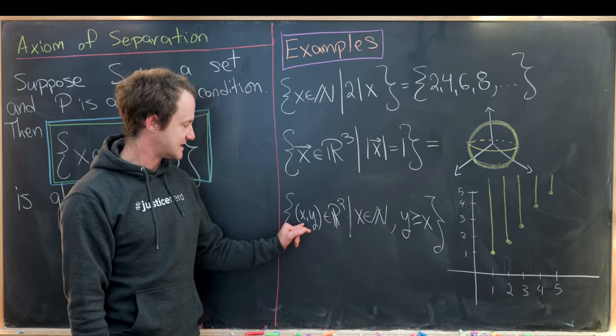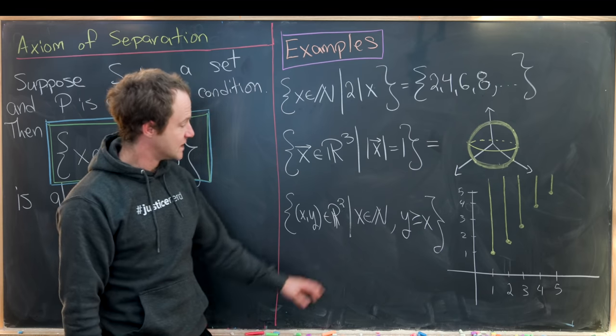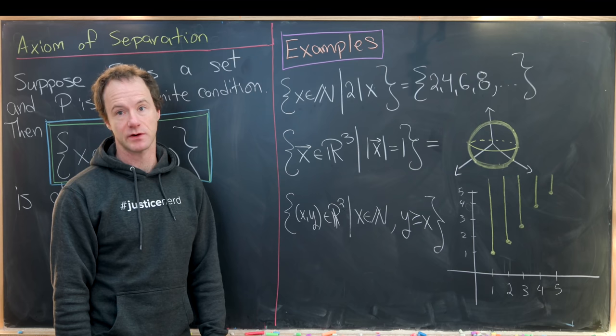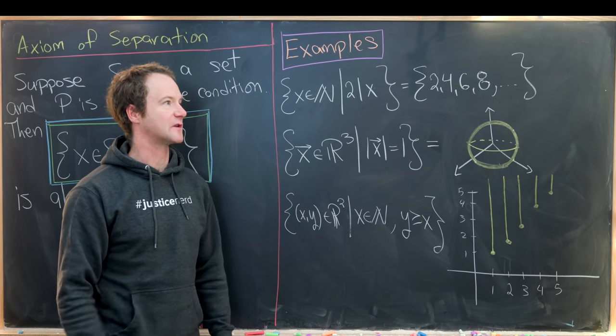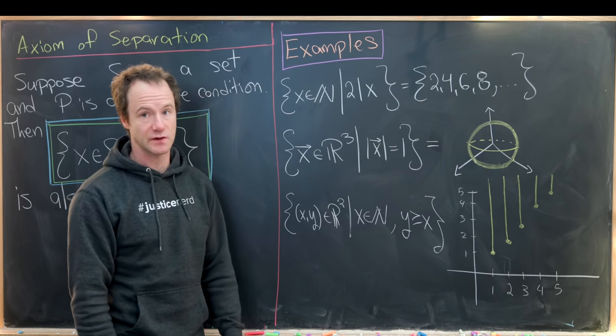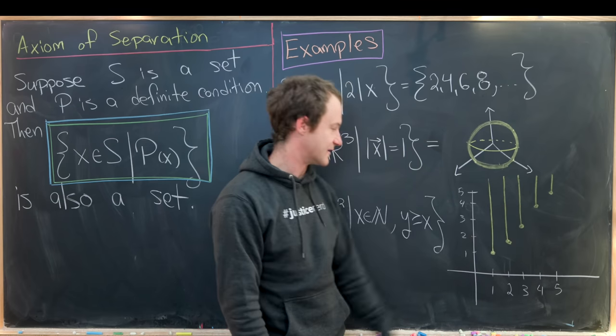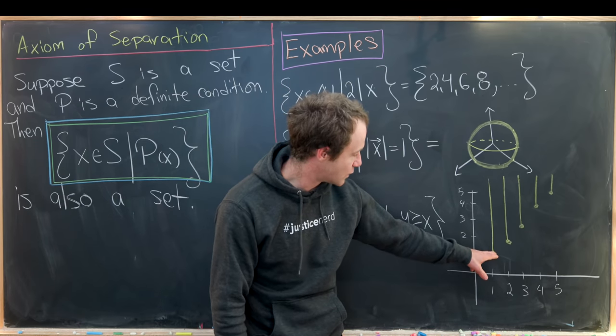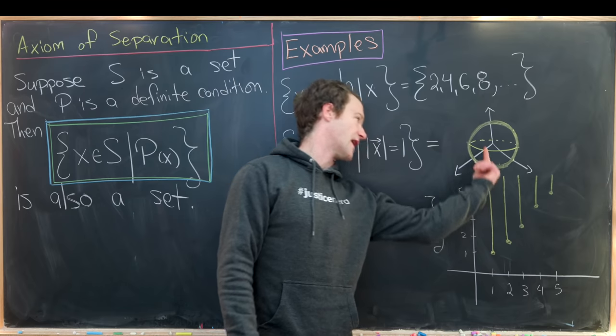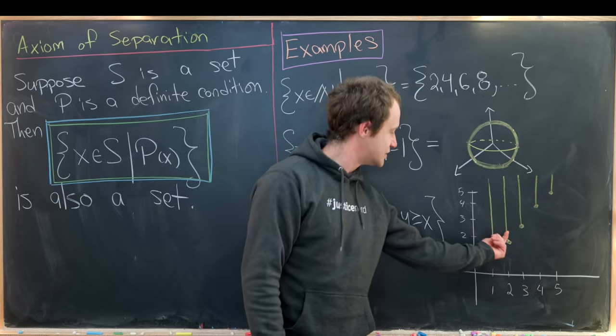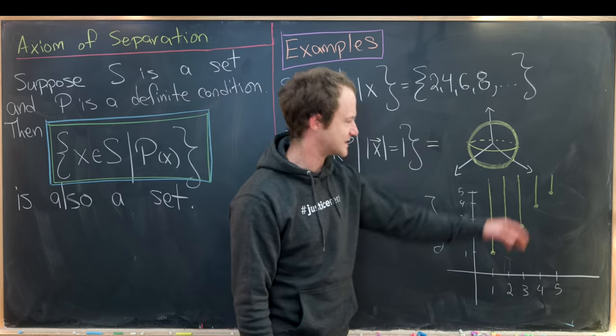Then for my next example, let's take all points XY in R2, and they satisfy the following binary condition. So X must be a natural number and then Y must be bigger than or equal to X. So that means the only possible values for X are 1, 2, 3, 4, so on and so forth. And then Y has to be bigger than whatever that natural number is. So that's going to give us this string of vertical lines. So notice if X equals 1, Y is allowed to be anything bigger than or equal to 1. So that'll give us this line segment or this ray going upwards. If X is equal to 2, Y is bigger than or equal to 2, we have that ray going upwards, and then so on and so forth. So this is like an upside down staircase or something.